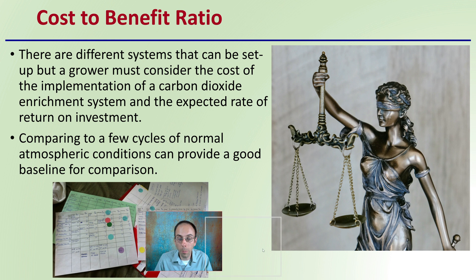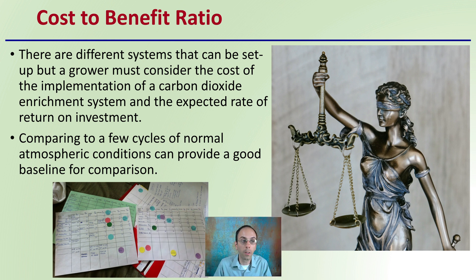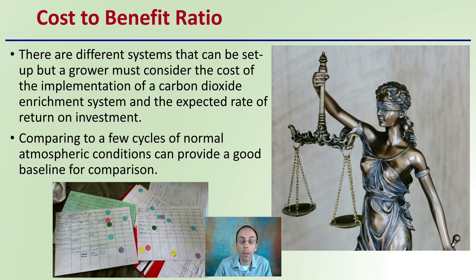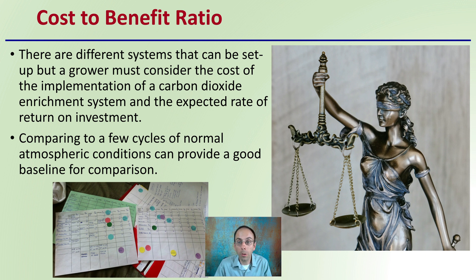Now the cost-to-benefit ratio. A grower must consider the cost of implementing a carbon dioxide enrichment system and the expected rate of return on that investment. Comparing a few growth cycles under normal atmospheric conditions can provide a good baseline to determine whether it's really going to be worth it.